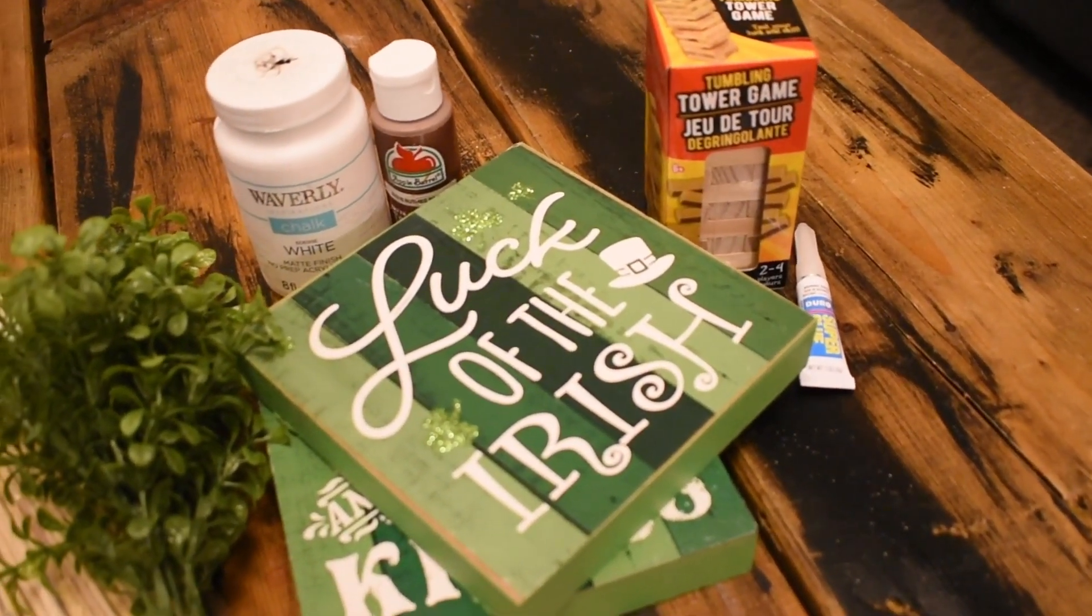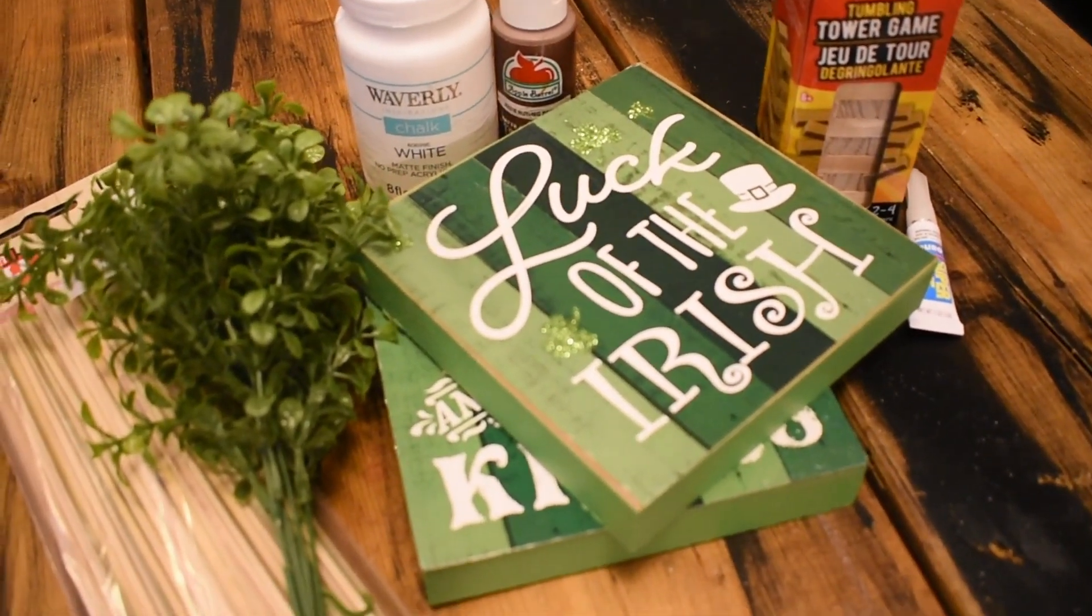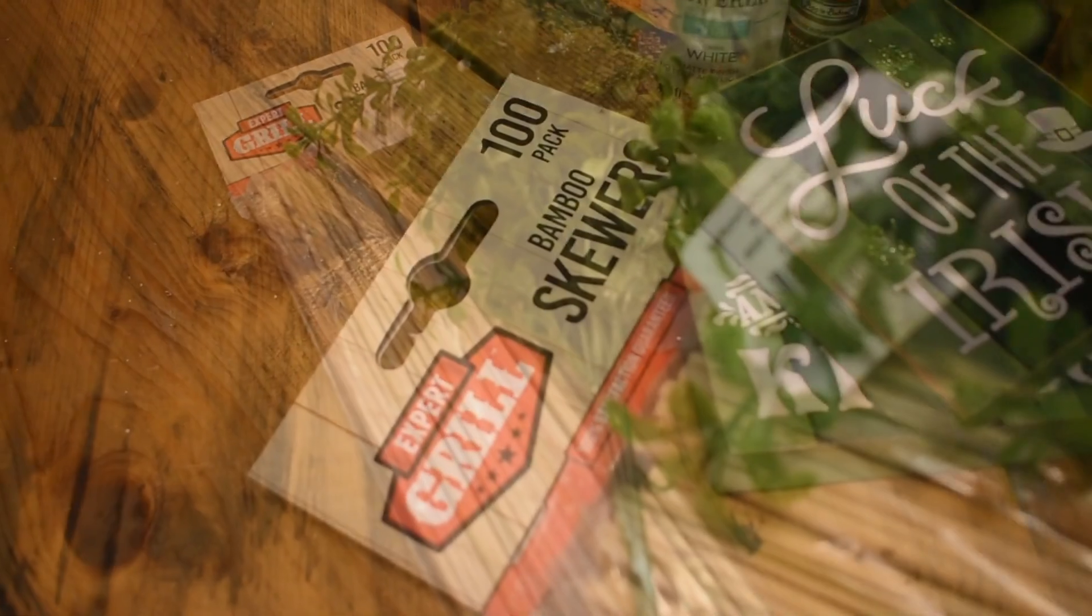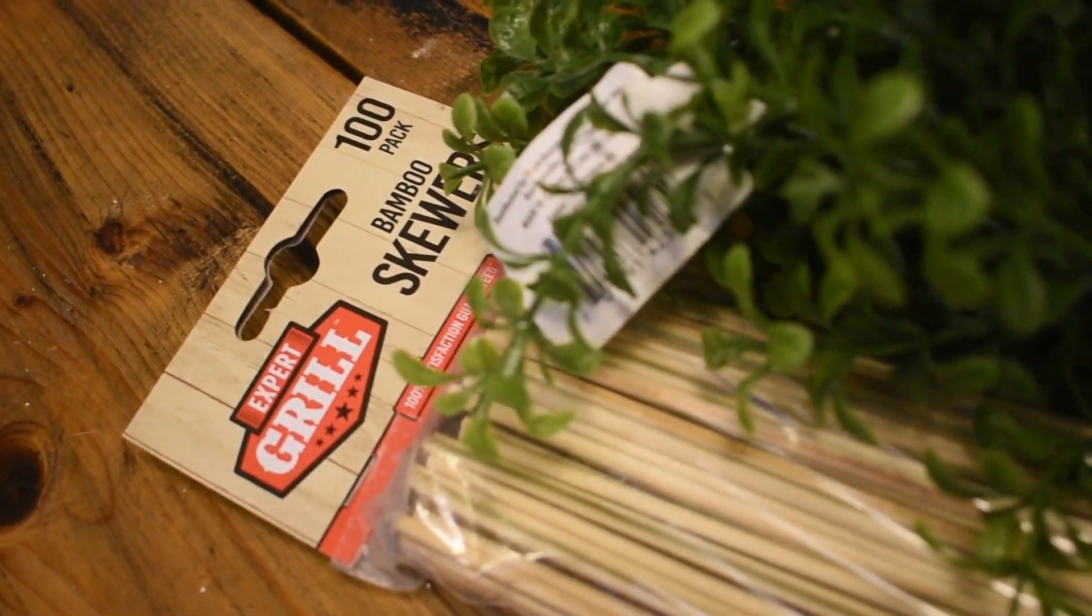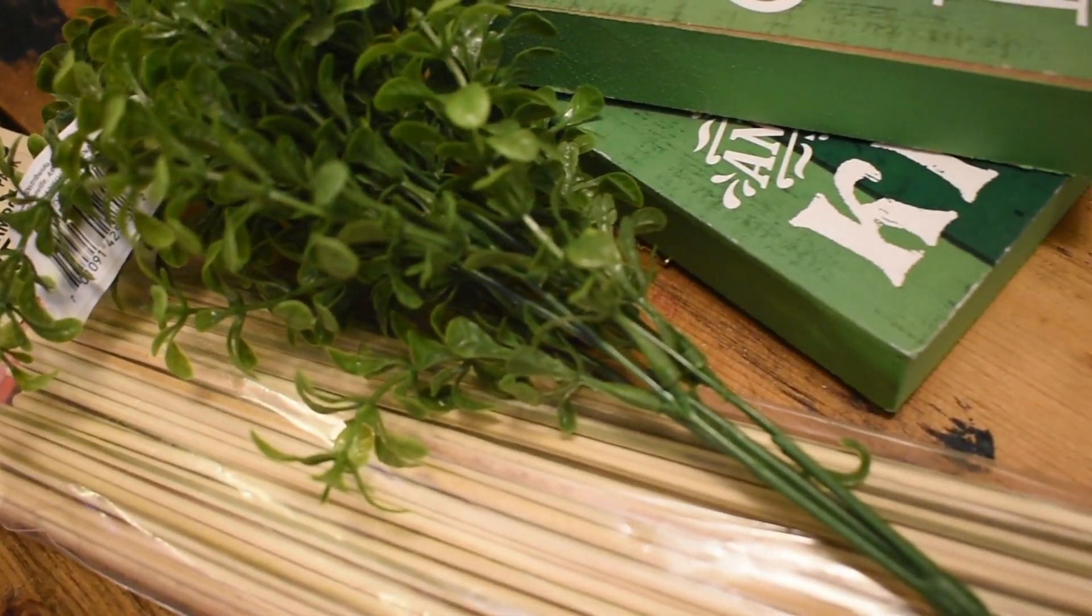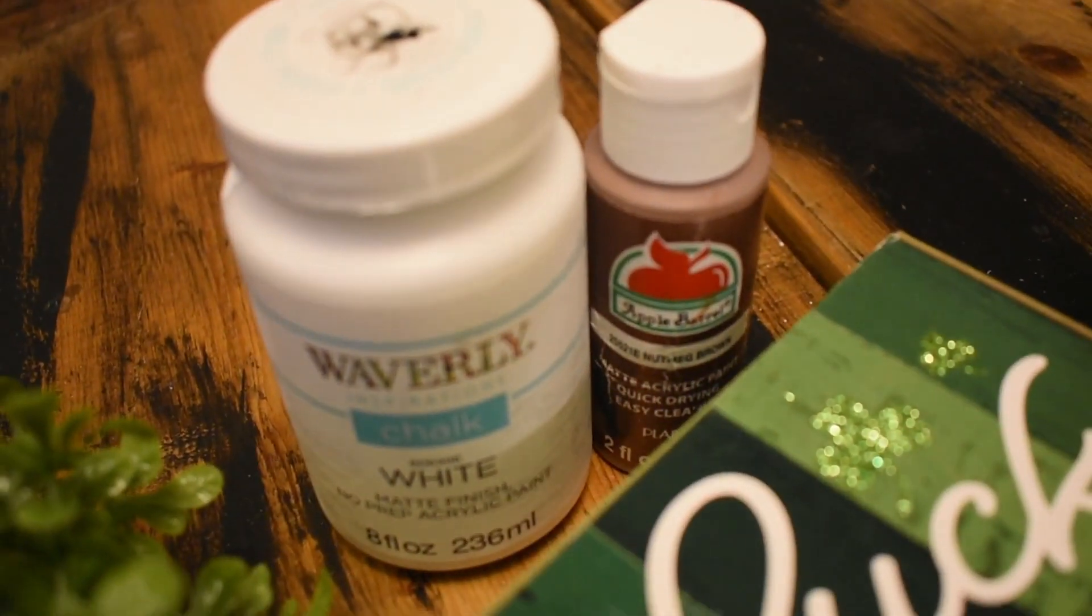For this first project, you're going to need a pack of the Tumbling Tower wooden block games from Dollar Tree, a pack of super glue, two wooden frames that say Luck of the Irish from the Dollar Tree, Waverly white chalk paint, brown paint, a boxwood pick from Walmart, and then a pack of skewers from Walmart as well.